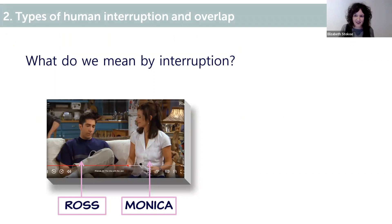In case you've never seen Friends, it was a very long running series about a group of six friends living in New York. This clip comes from a storyline which focuses on Monica, who's there indicated on the screen, and she wants to have a baby but she doesn't have a partner. So she's decided to visit a sperm bank and her brother Ross, also there on the screen, is trying to discourage her.